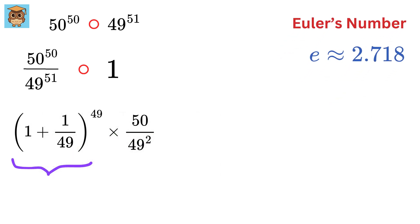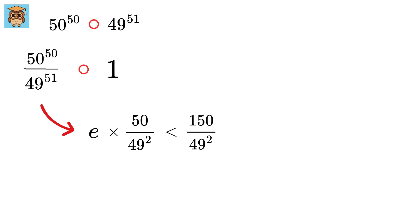So 1 plus 1 upon 49 whole raised to 49 will be approximately e. So the expression becomes e times 50 over 49 square. As e is less than 3, so this value will be less than 3 times 50 over 49 square, or 150 over 49 square.